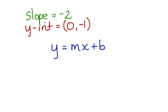Now we can substitute negative 2 in for our slope and negative 1 in for our y-intercept. This gives us the equation of the line: y equals negative 2x minus 1.